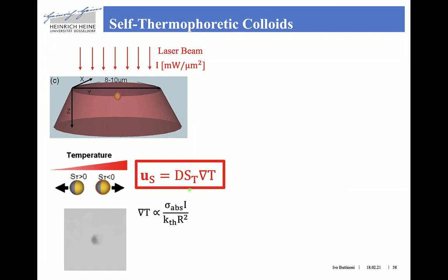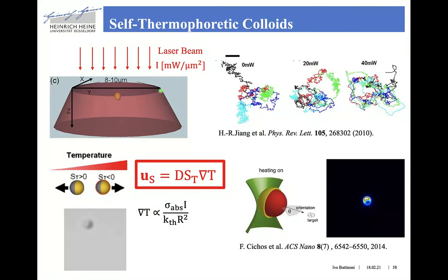The sign of this Soret coefficient can interestingly be changed by adding surfactant, which leads to either the colloid swimming towards the gold side or with the uncoated hemisphere heading. The great advantage of this method is that this temperature difference — and therefore this velocity — can be tuned in situ by adjusting the illumination power. However, the drawback is that the intensities required to obtain slip velocities of the order of a few microns per second are fairly large, which means that either one looks at the motion within a very small area, or one finds a way to follow the particle with a laser beam using a feedback mechanism.